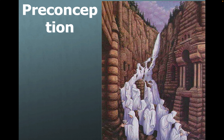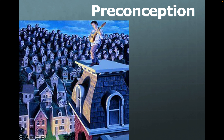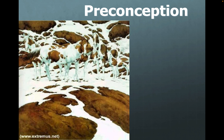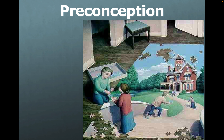Preconception — we have ideas about what things are supposed to look like. There are optical illusions: one looks like water coming down then turns into monks wearing white outfits; a man playing guitar on top of his house where the houses turn into people in the background. The question is how many horses are there — and the answer is you have to count heads, not legs. There are five horses.